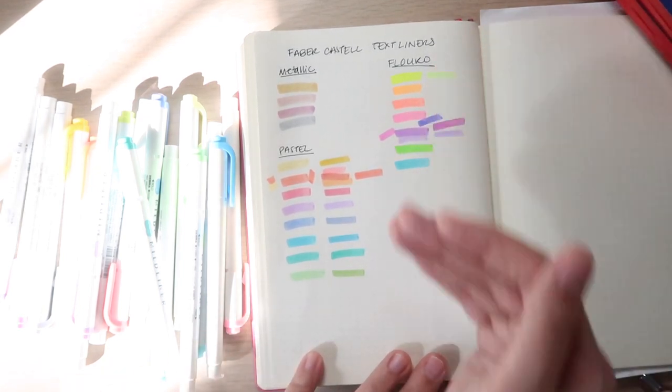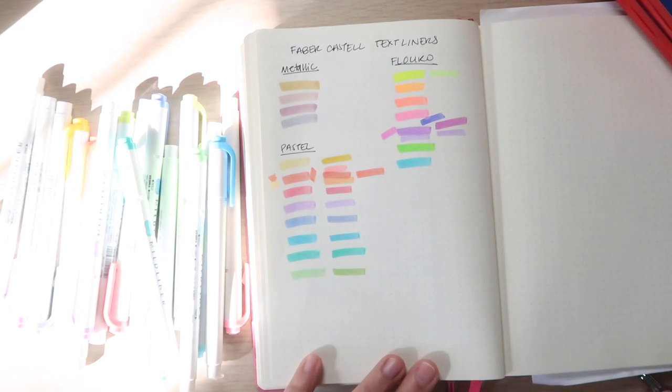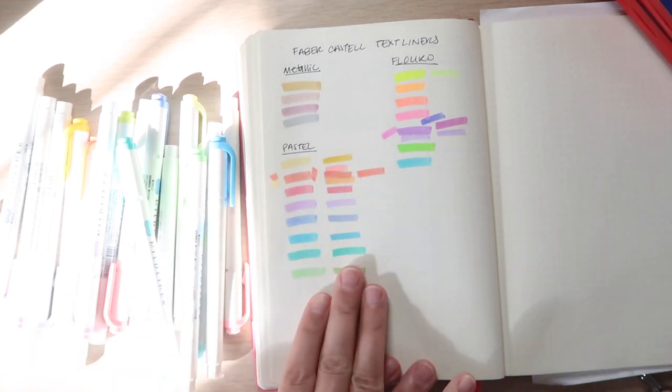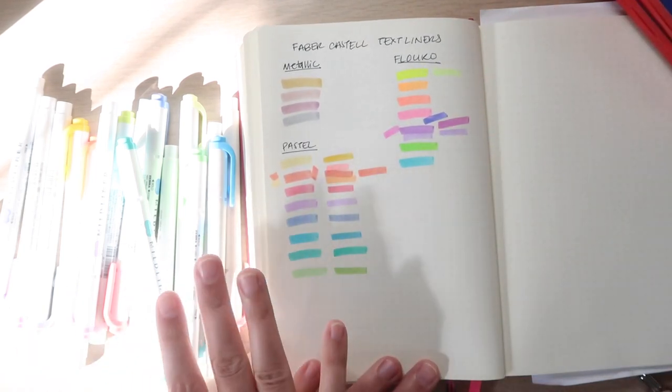The fluorescent ones are nice and bright. If you have the Mildliners, these would be a worthy addition color-wise if you think you're going to use them. I personally don't use super fluorescent highlighters. I really like the pale pastel style. So these would not be ones I would necessarily use.